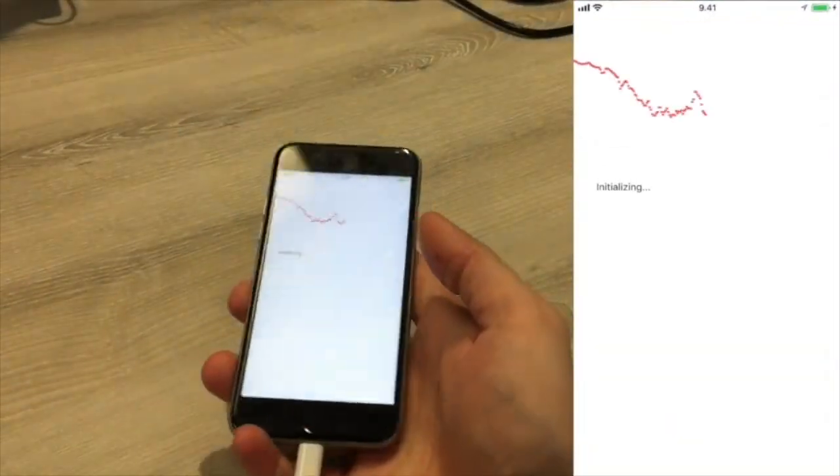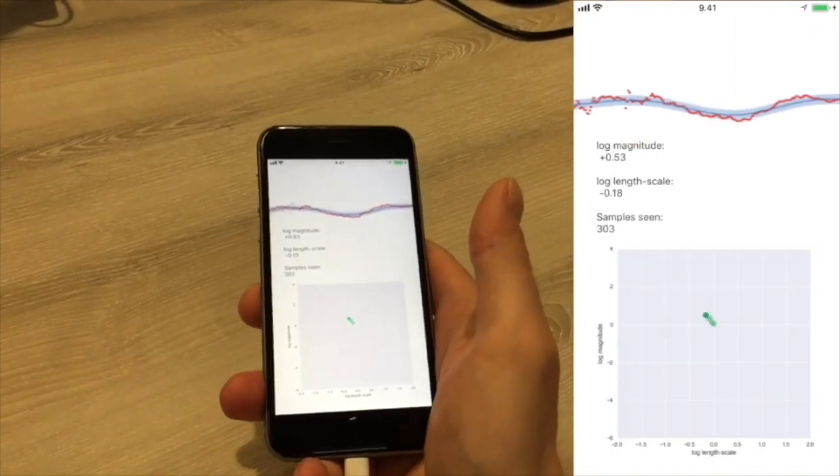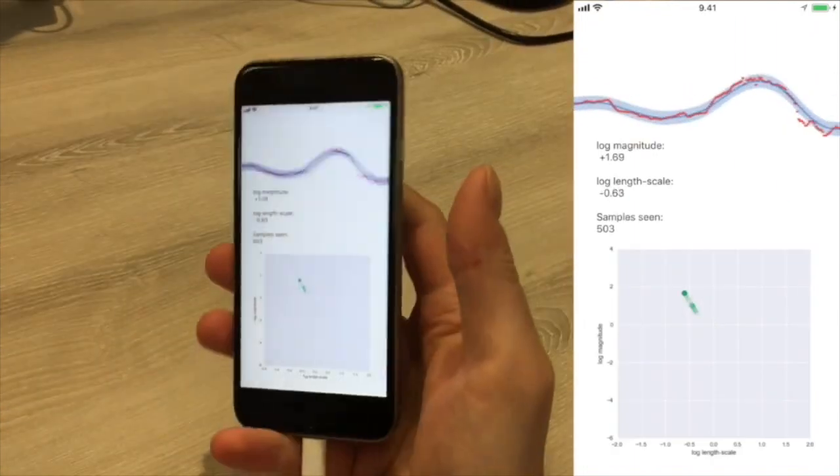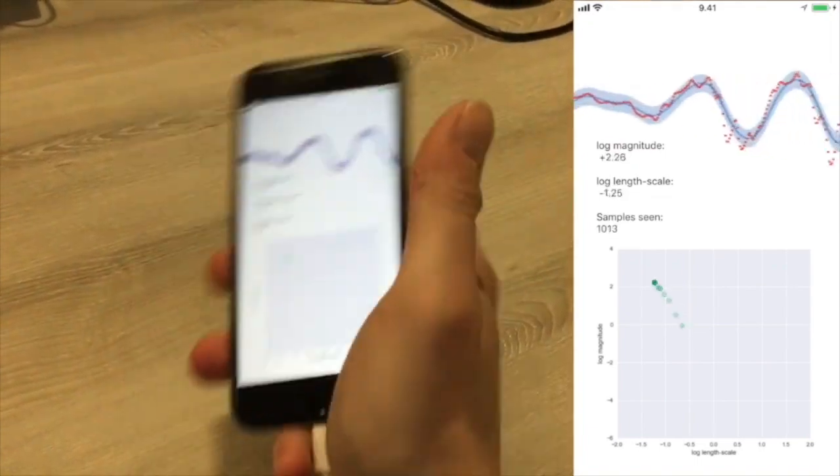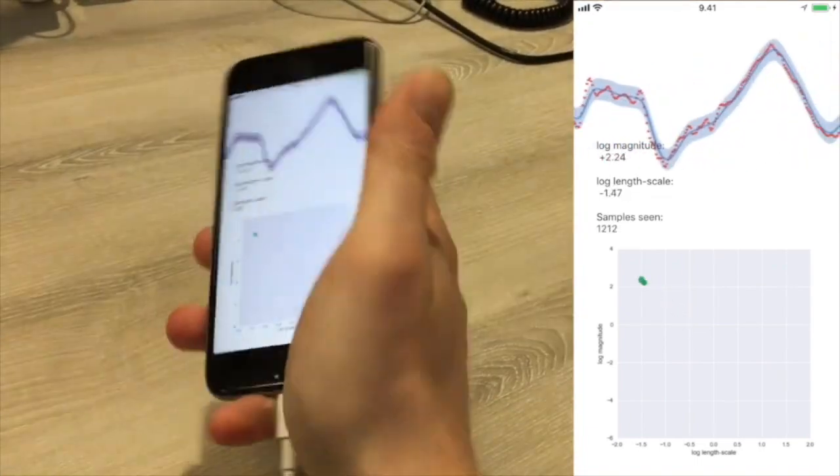Finally, we demonstrate how the Infinite Horizon GP can run in real-time on an iPhone, on a continuous data stream from the phone accelerometer. The adaptation of the hyperparameters is shown in the log plot.